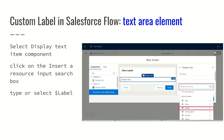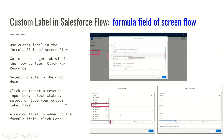Custom labels can be used in Salesforce Flow — in a text area, while doing comparisons, or while assigning a value to a variable. To get a custom label in Flow, the resource is $Label. Once you click on that, you can select the desired label. In the same manner, you can use a custom label in a Flow formula field as well, wherever it is accessible in the flow.